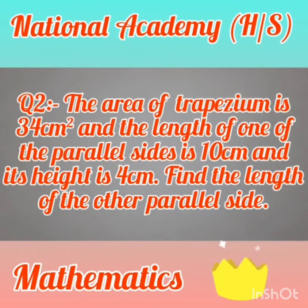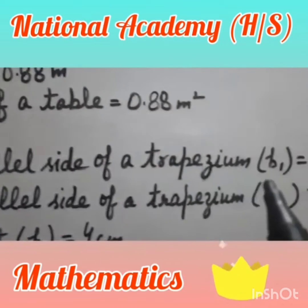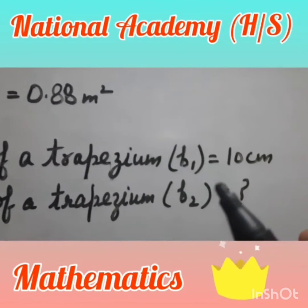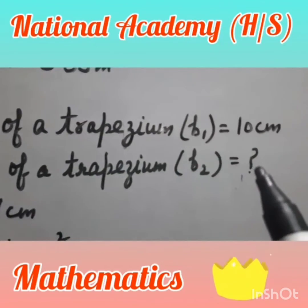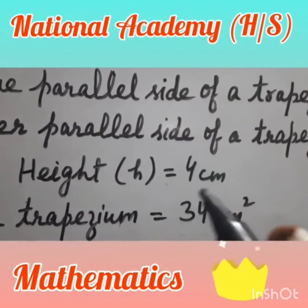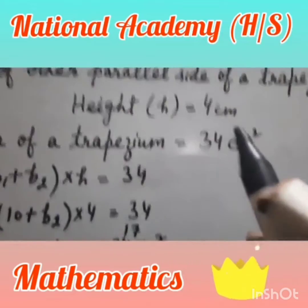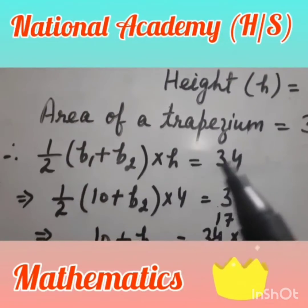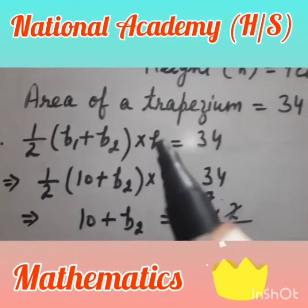Question 2: The area of a trapezium is 34 square centimeters and the length of one of the parallel sides is 10 cm and its height is 4 cm. Find the length of the other parallel side. Given: B1 = 10 cm, height H = 4 cm, area = 34 sq cm. We need to find B2. Using area = half × (B1 + B2) × H.